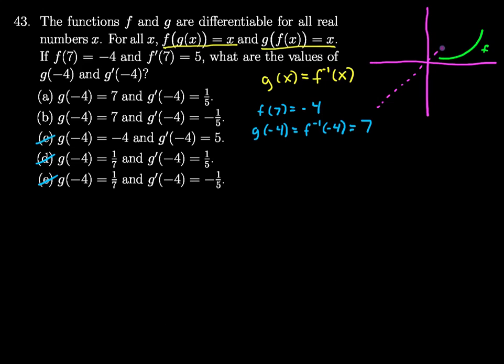So here's the identity line, line y equals x. And if I reflect this over that identity line, it's going to look something like this. That's going to be g.